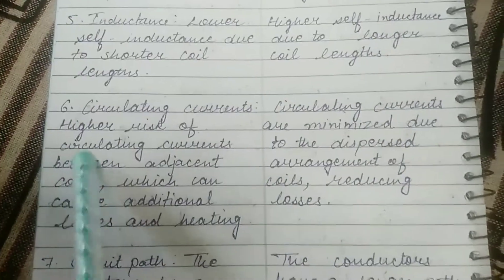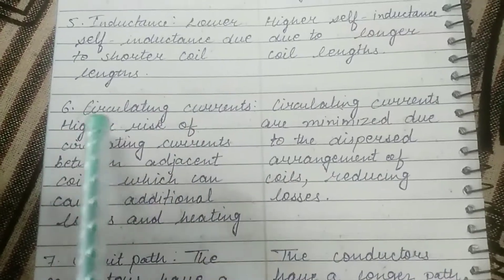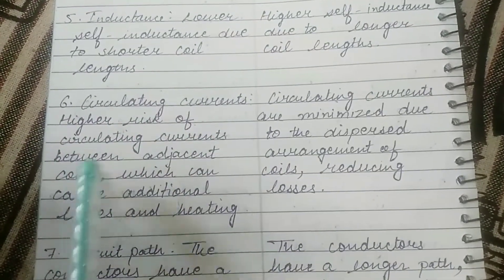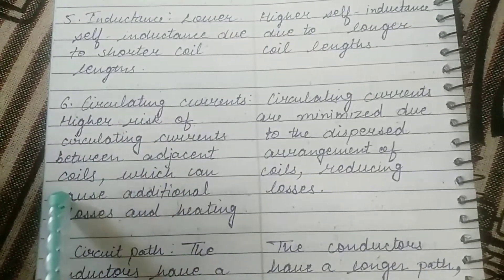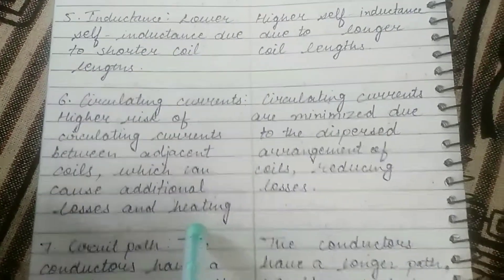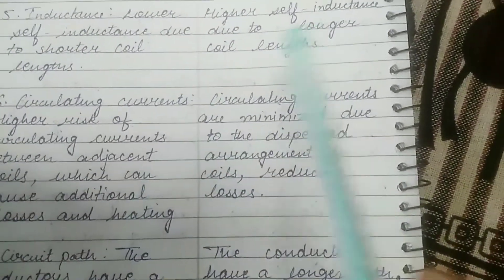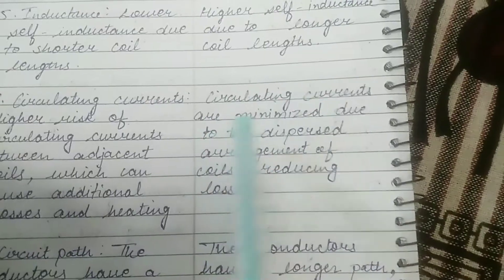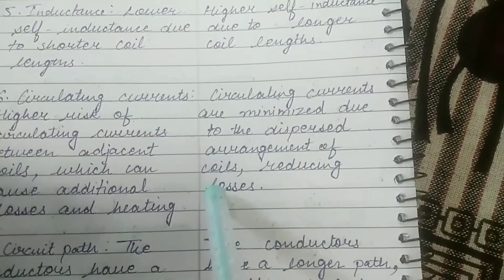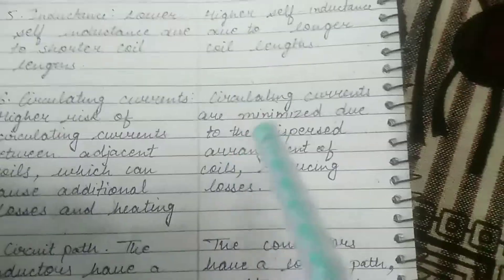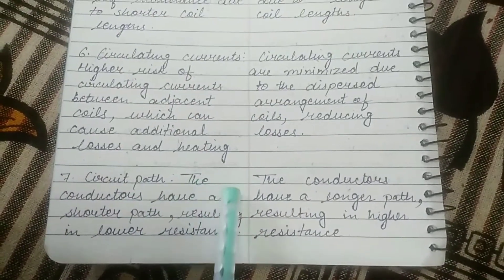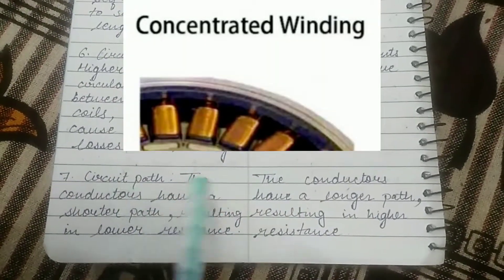The next difference is circulating currents. In concentrated windings, there is a higher risk of circulating currents between adjacent coils, which can cause additional losses and heating. But in distributed winding, circulating currents are minimized due to the dispersed arrangement of the coils, reducing losses.